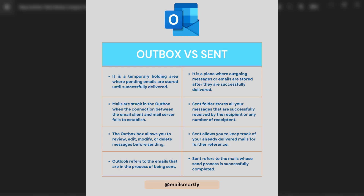The last difference: the outbox refers to emails that are in the process of being sent — it is like a warehouse where you keep emails in raw form and can send them after processing. The sent folder refers to emails whose send process has been successfully completed. When your email is successfully sent to a recipient, a copy is saved in the sandbox. If you find your mail in the sandbox, that means your mail was successfully sent to your recipient.